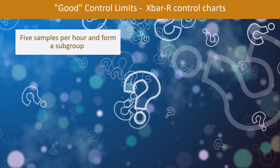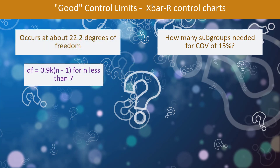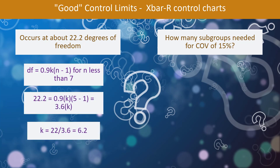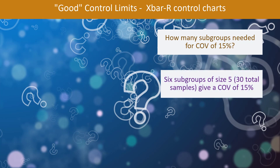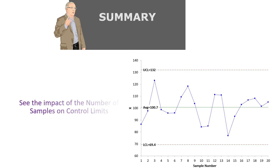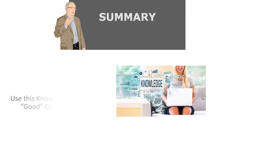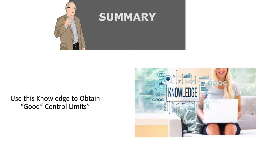We can do the same thing with X-bar and R charts. Suppose we have 5 samples per hour forming a subgroup — so our subgroup size is 5. How many subgroups are needed for a COV of 15%? That occurs at about 22.2 degrees of freedom. Plugging into the equation and solving for k, we need 6 subgroups times the subgroup size of 5, so 30 total samples to get a coefficient of variation of 15%. In summary: we started with our 200-sample process in statistical control, looked at the impact of number of samples on control limits, and used degrees of freedom and coefficient of variation to determine how many samples are needed for good control limits.